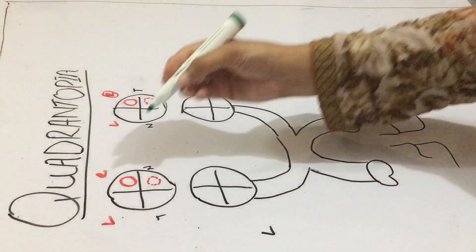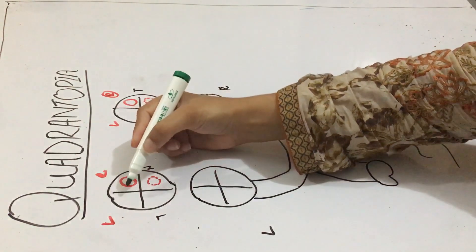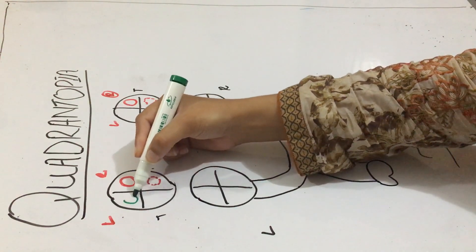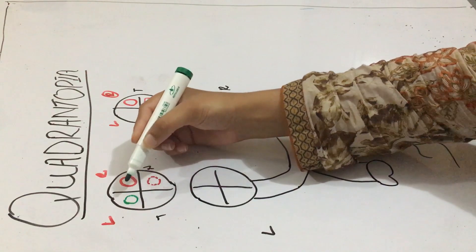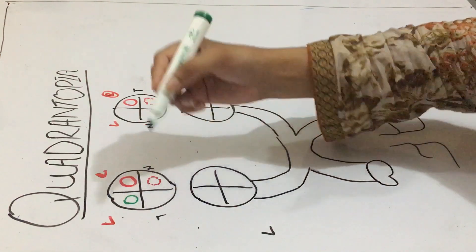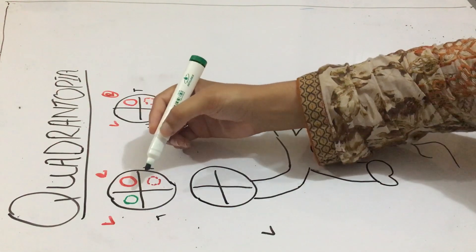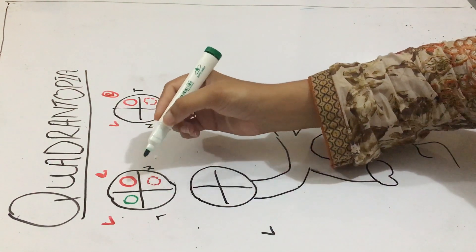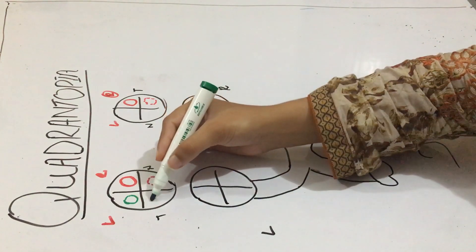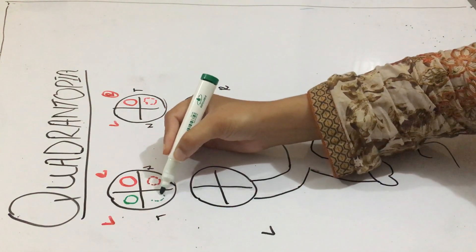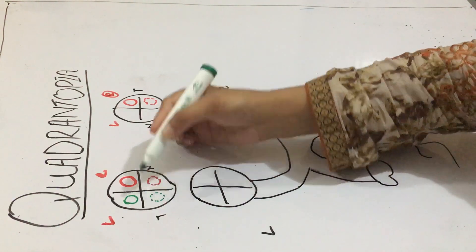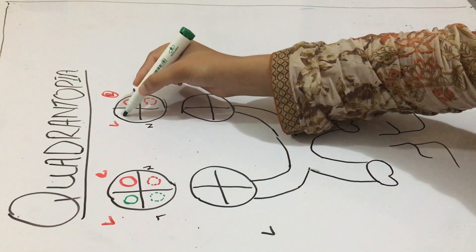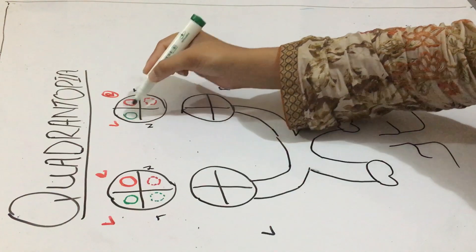For the left visual field I will use the green pen. Again, for the superior quadrant I will draw a complete line and for the inferior quadrant I will draw a dotted line. Again, complete line and dotted line.